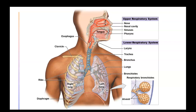The nasal concha help to moisten and warm incoming air, and also clean out debris using nasal hairs and mucus. Further inside the skull you can see sinus openings, which help lighten the skull and aid resonance of sound and voice. These chambers can become filled with mucus and overgrown with bacteria, leading to a sinus infection.